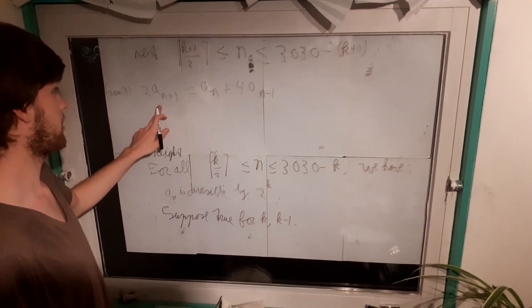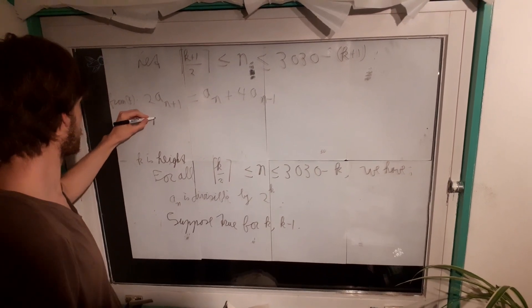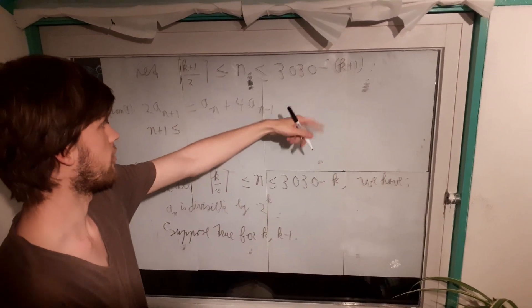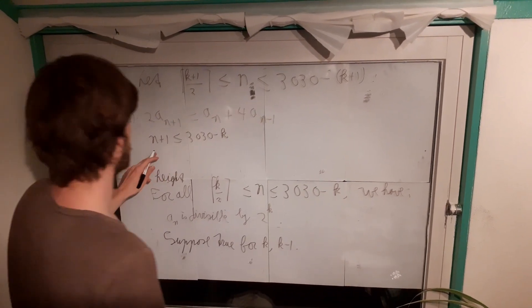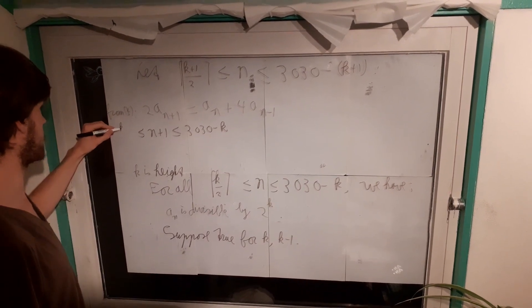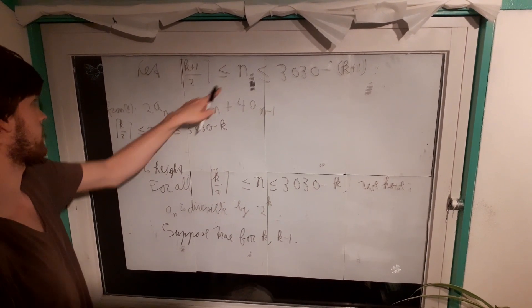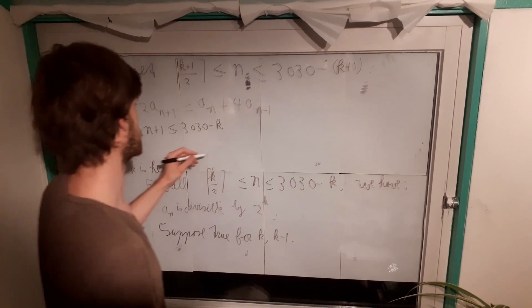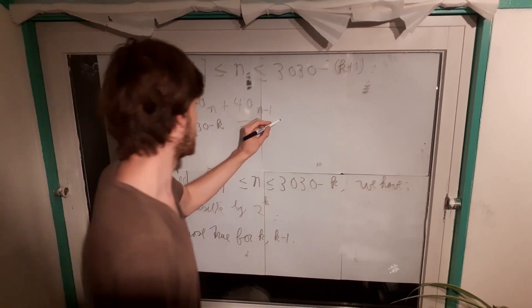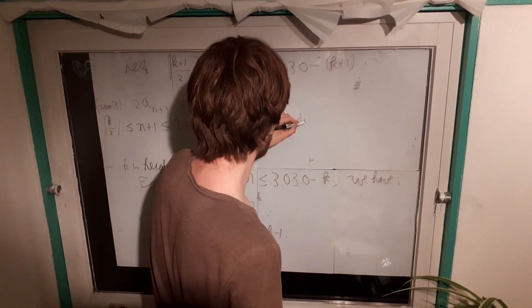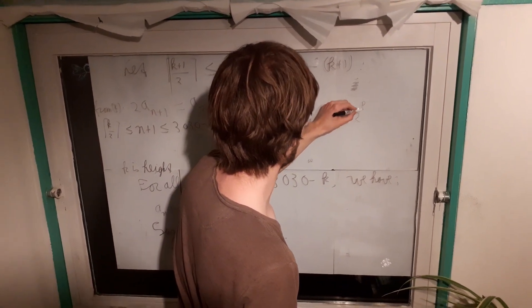And now we have some bounds on n plus 1 and n minus 1. So we have n plus 1 is at most 3030 minus k. And, of course, it's still at least k over 2 because this is just a weaker bound than what we have here. This is plus 1 on this side and minus 1 half on this side. So it's going to be fine. And then here we use induction hypothesis to conclude that a_{n+1} is divisible by 2 to the power of k.